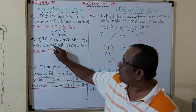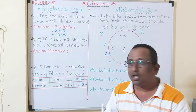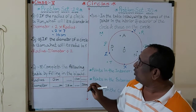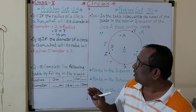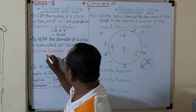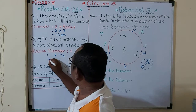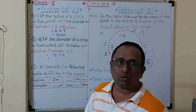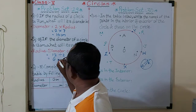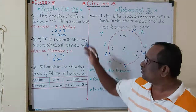The second example: if the diameter of a circle is 12 centimeters, what will its radius be? The formula is: radius = diameter ÷ 2. Diameter is 12 cm, so 12 ÷ 2 = 6. Radius is 6 centimeters. This is very simple, I hope you understood.